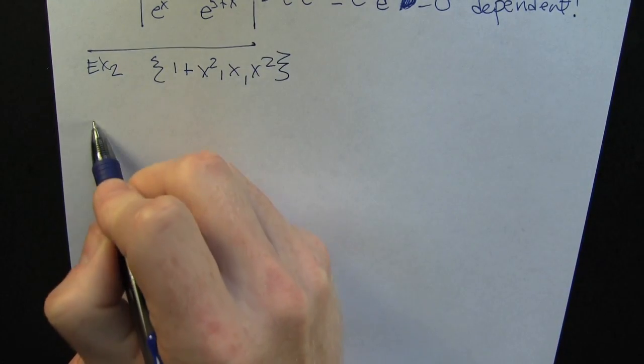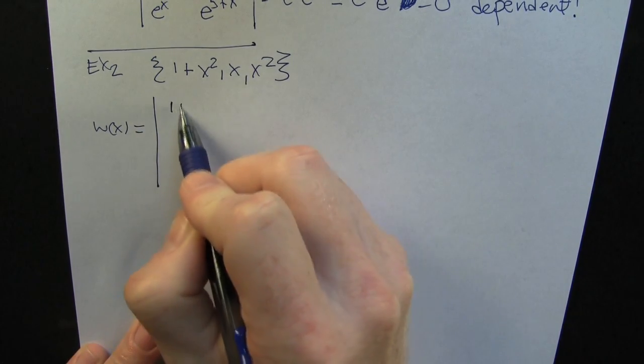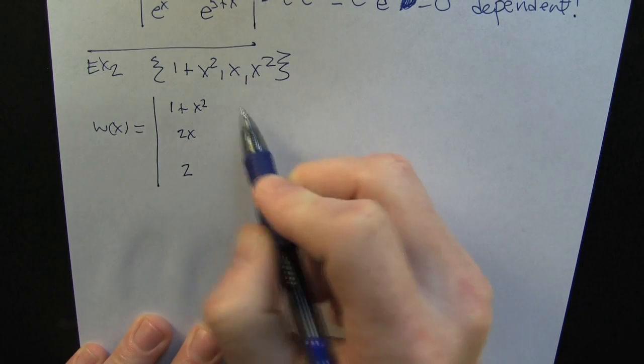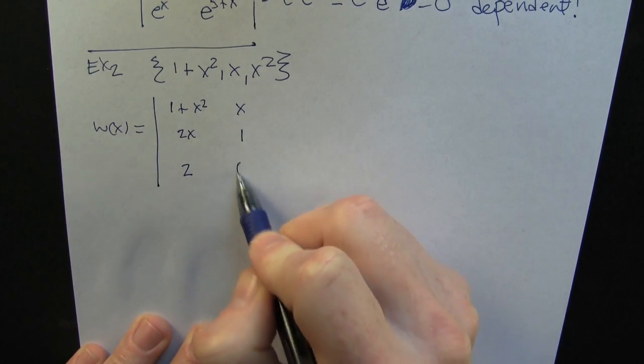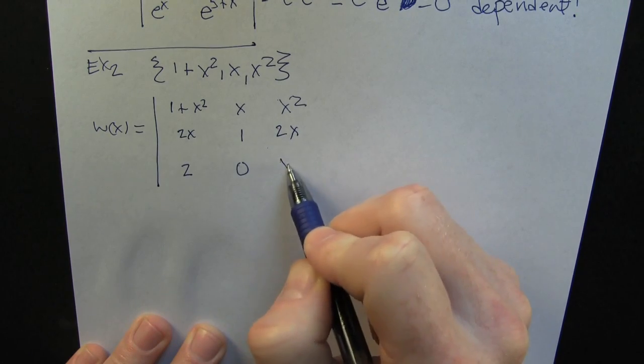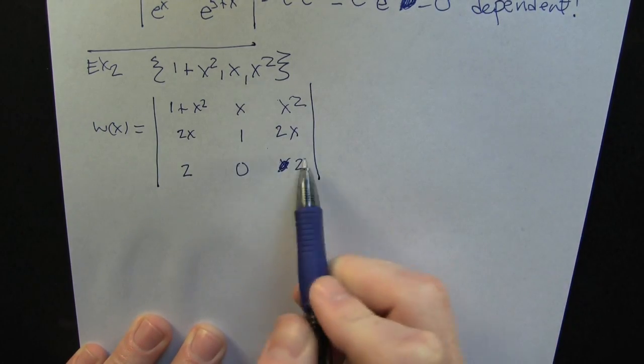Now for our second example. Maybe we can get some independence. Well, I don't know. Let's check it. Let's check what? Let's check the Wronskian. So in checking the Wronskian, I'm gonna line my functions across the top. Then I'm gonna take here two derivatives to make that determinant determinable.